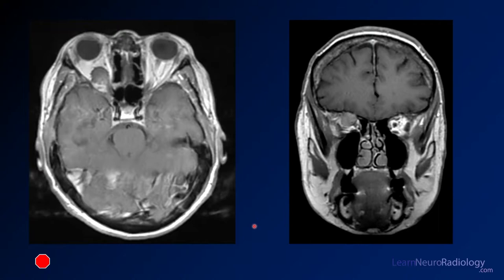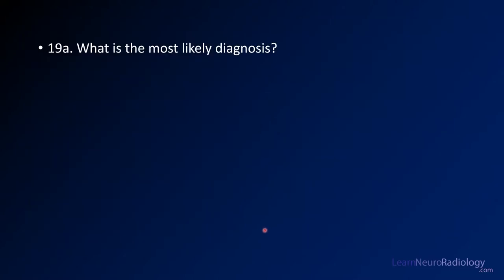Your clue here is to take a look and see if these images look different at all, and to think about why they might look different. Your question for case 19 is: what's the most likely diagnosis here?